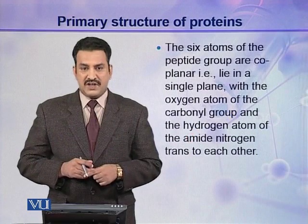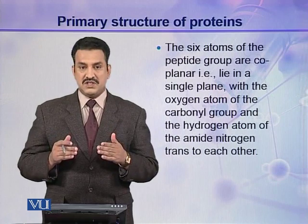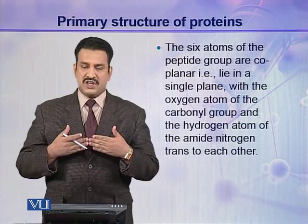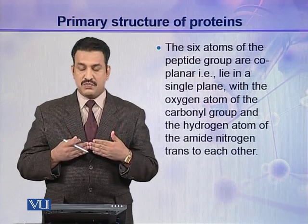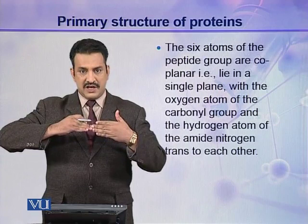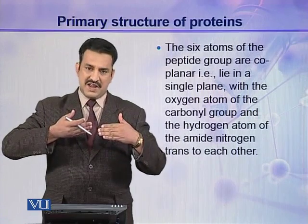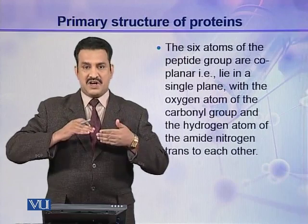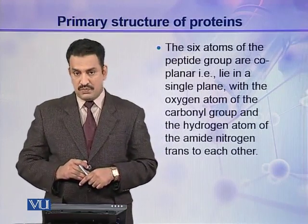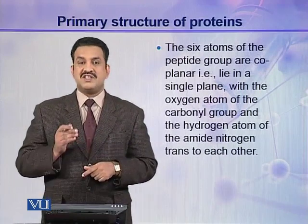The second important finding of Pauling and Corey was that the six atoms of a peptide group are coplanar — they lie in a single plane. A polypeptide or protein contains different peptide groups, and each peptide group has six atoms that lie in a single plane. The next six atoms of the next peptide group lie in another plane, and so on — these peptide groups are each coplanar within their own plane. Furthermore, the oxygen atom of the carbonyl group and the hydrogen atom of the amide nitrogen are always in the trans position.